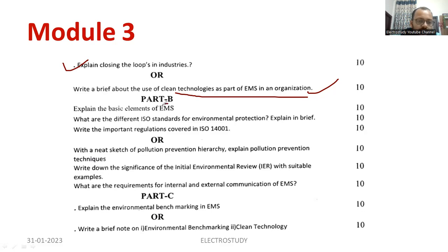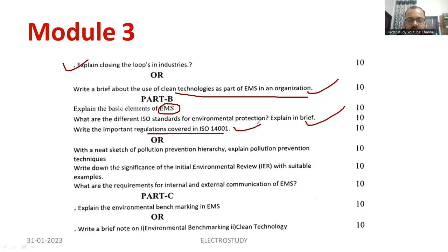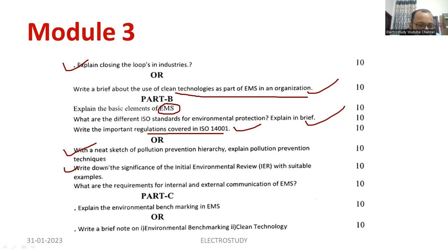Explain the basic elements of EMS — that block diagram you can mention. Similarly, ISO standards of environmental protection: ISO 14001 you can explain. The same question may also be asked as 'Explain ISO 14001.' With a neat sketch of the pollution prevention hierarchy, explain the pollution prevention techniques — what are the different methods of preventing pollution, 10 marks, at least 5 points worth 2 marks each. Then write down the significance of initial environmental review — I already explained this in the question paper discussion, kindly visit that video link available in the description box.